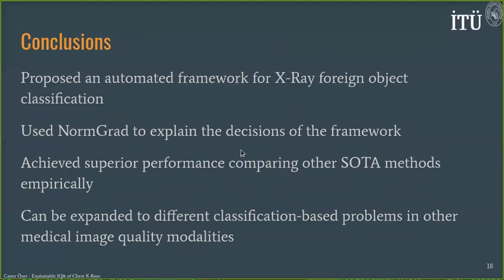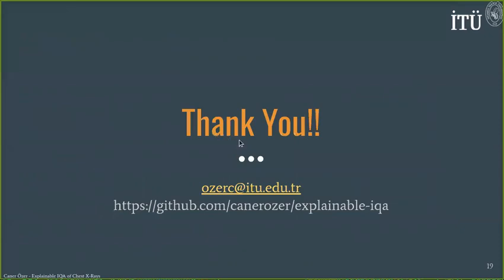To conclude, we propose an automated framework for X-ray foreign object classification leveraging a ResNet backbone. To localize foreign objects within an image, we use NormGrad, which effectively combines the virtual identity layer strategy with its norm-based computation to construct a saliency map. We demonstrate the superiority of NormGrad after comparing other state-of-the-art methods in the pointing gain benchmark on the Object-CXR dataset, and we are interested in expanding to different classification problems in other medical image quality modalities. We have open-sourced our code to make our research reproducible. For any questions, you can attend the discussion section on Friday at 1pm local time or send an email. Thank you for listening.